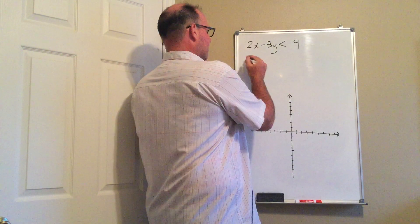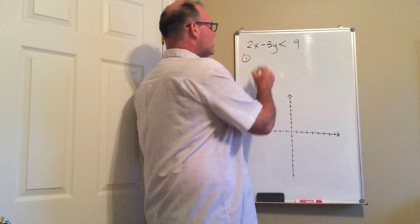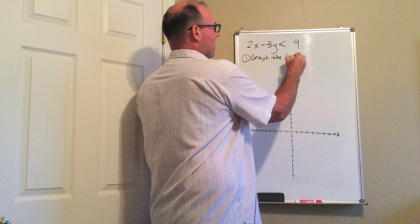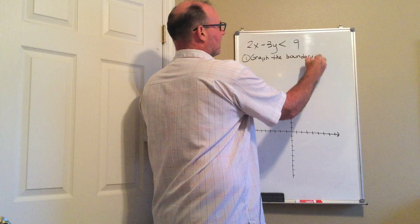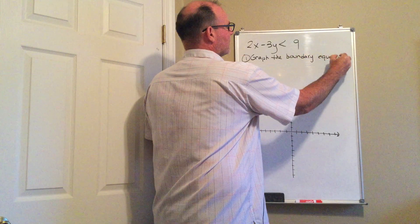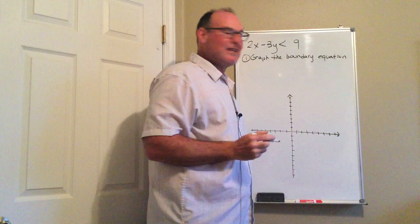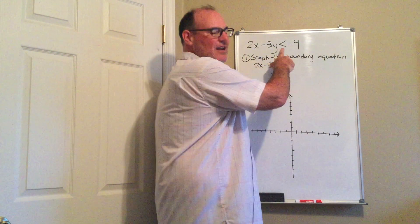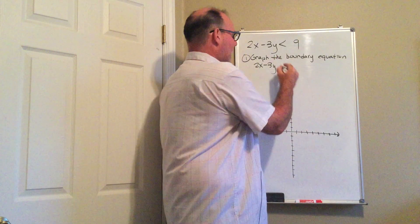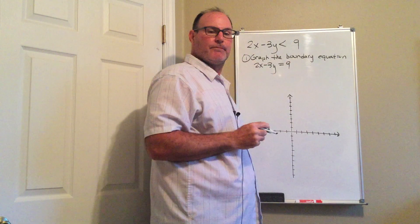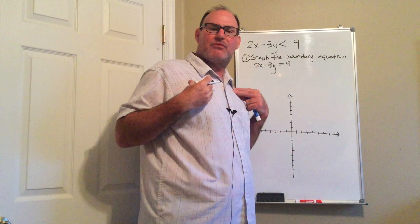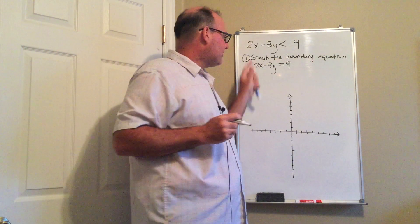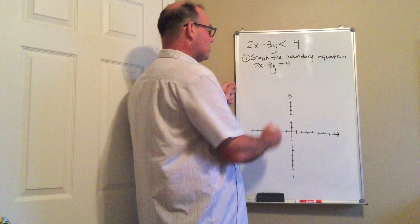Most of the work is in step one. Step one, you are going to graph the boundary equation. What the boundary equation is: I'm going to take the 2x minus 3y and instead of messing with the inequality, I'm going to change that to an equals. I like to graph with the slope and the y-intercept, so I'm going to solve this for y. If you choose to graph it with the intercepts, that's fine too.